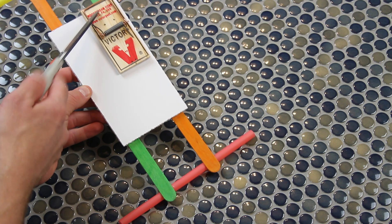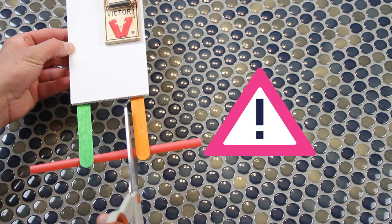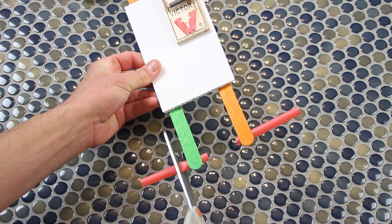We want to do a quick trim job to the straws. For the straw that's opposite the mousetrap, we want to cut in between the popsicle sticks, and we can give all four of them a trim on the outside of the sticks.